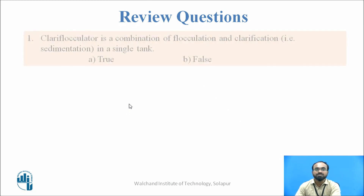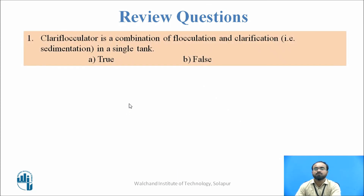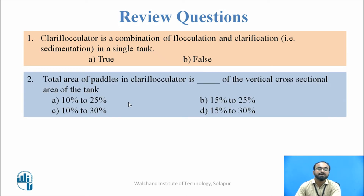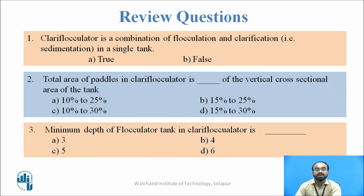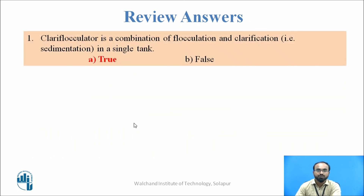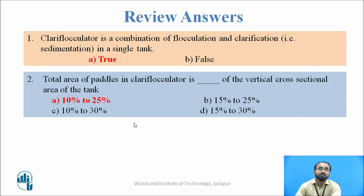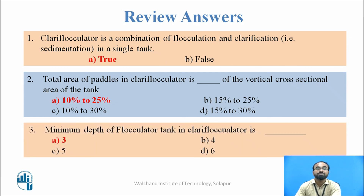Review questions: First, a clariflocculator is a combination of flocculation and clarification unit in a single tank — true or false? Second, what is the total area of paddles in a clariflocculator as a percentage of the vertical cross-sectional area? Third, what is the minimum depth of the flocculator tank in a clariflocculator? Answers: First, true. Second, 10 to 25 percent. Third, the minimum depth is 3 meters.